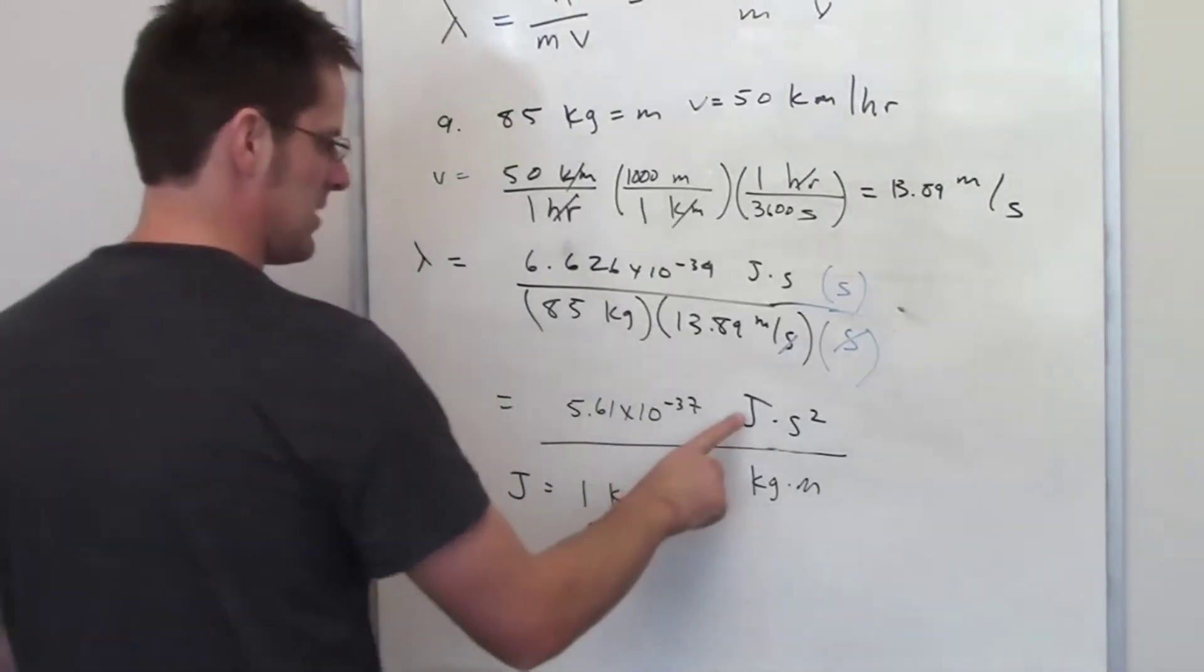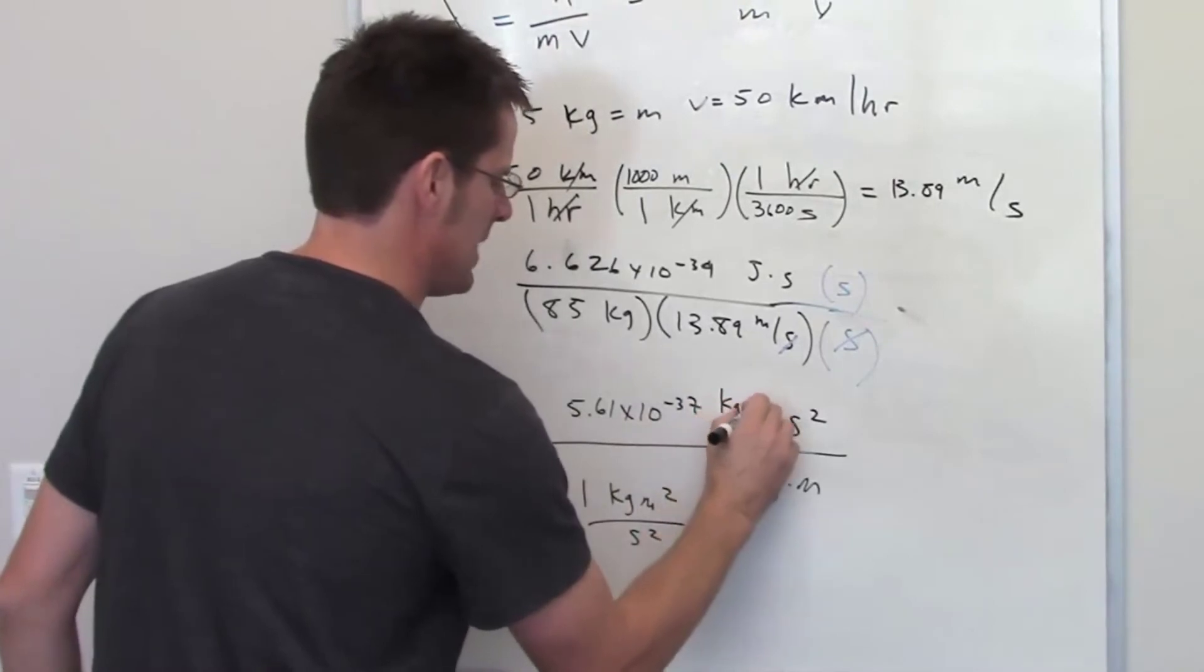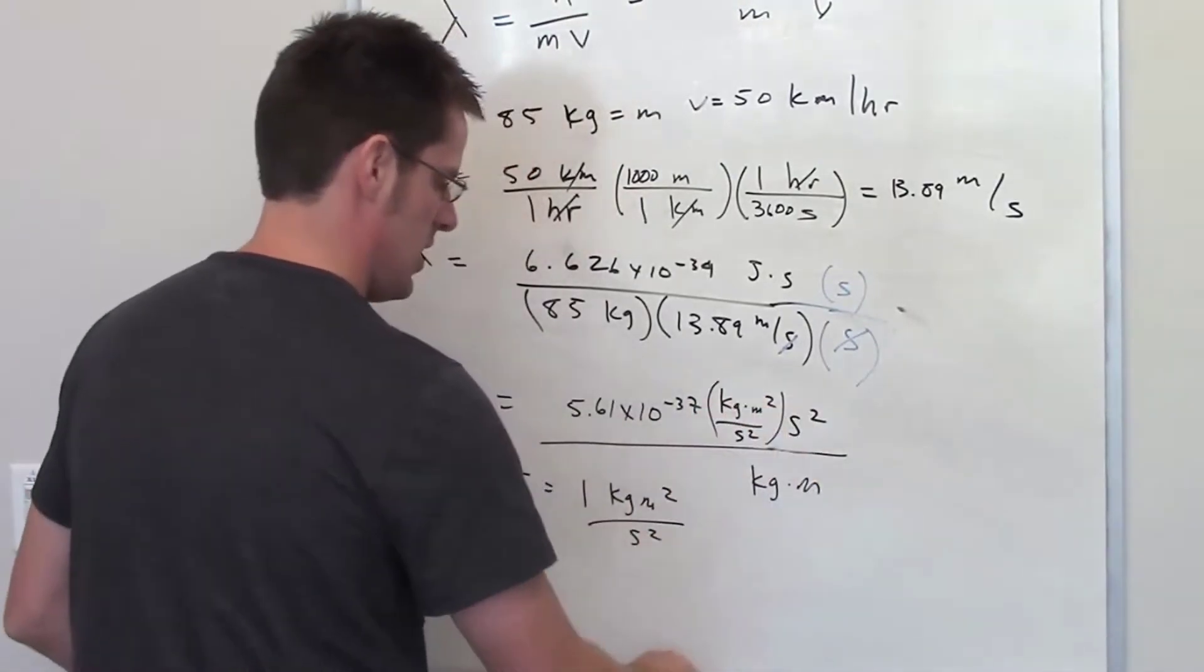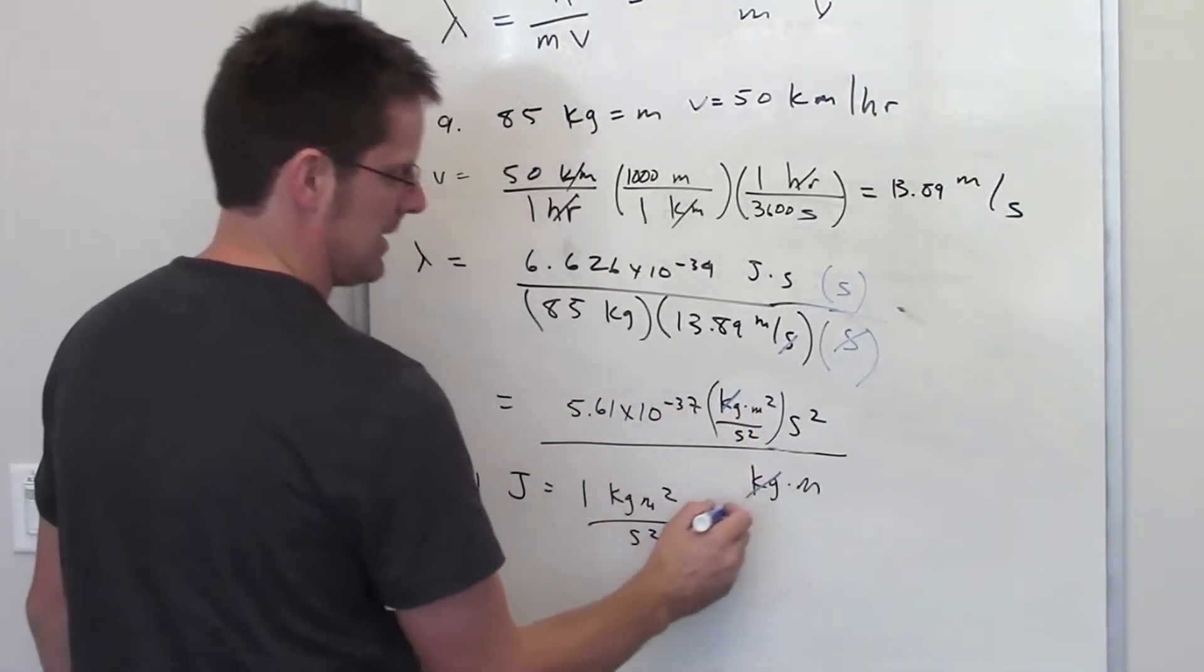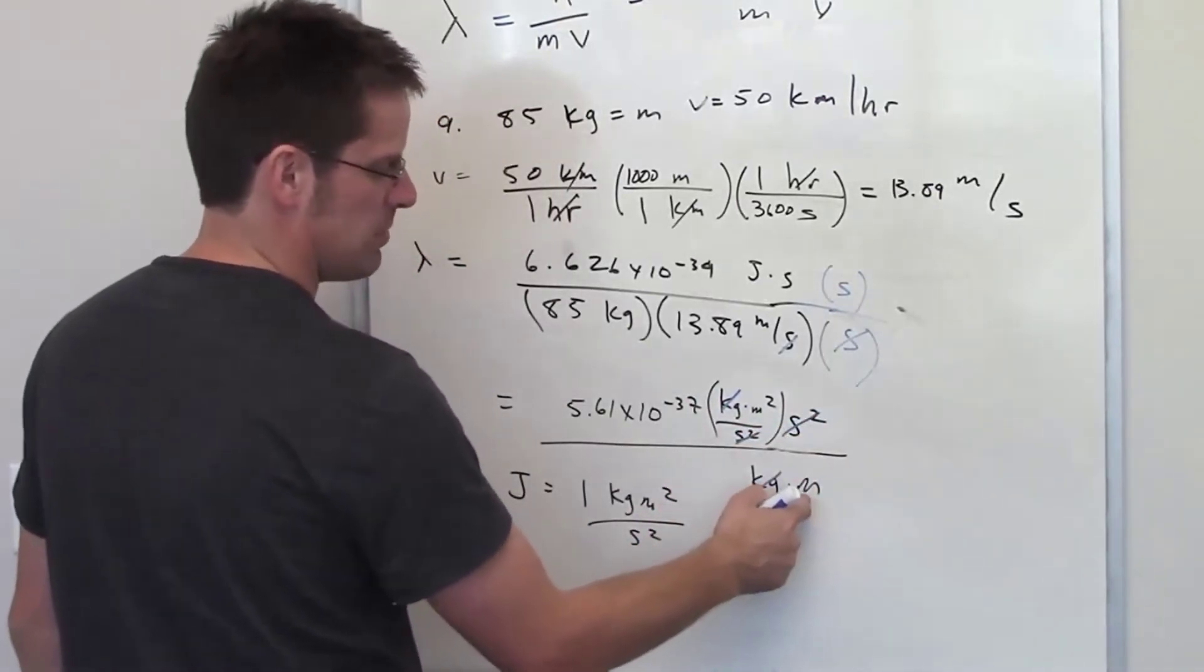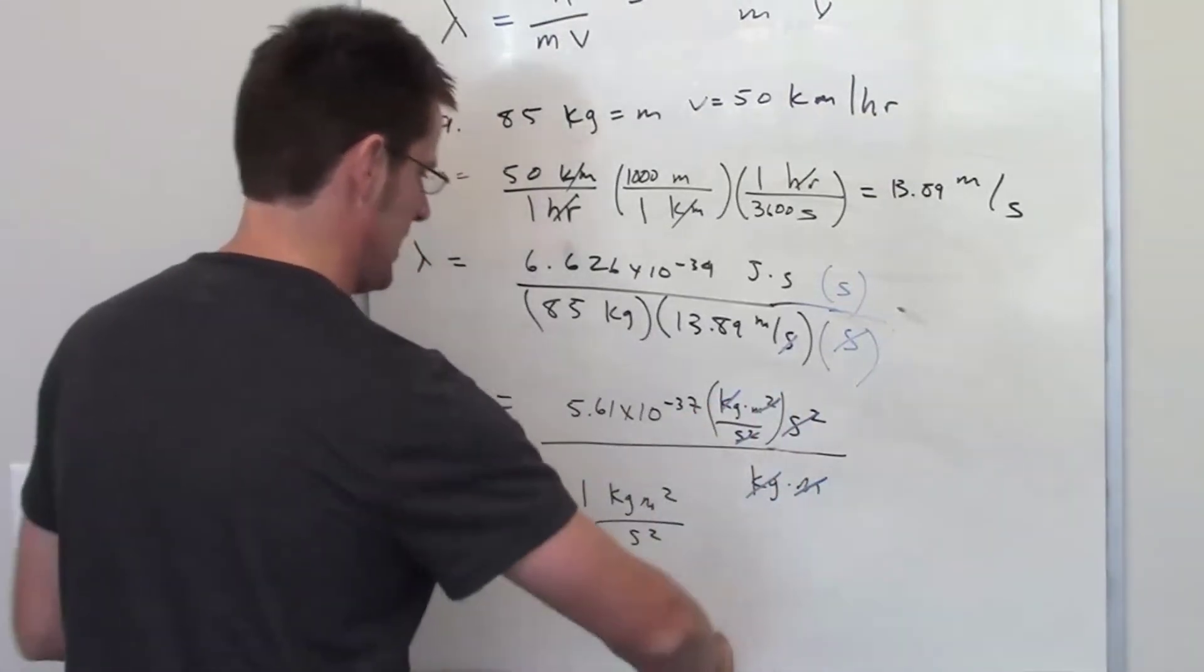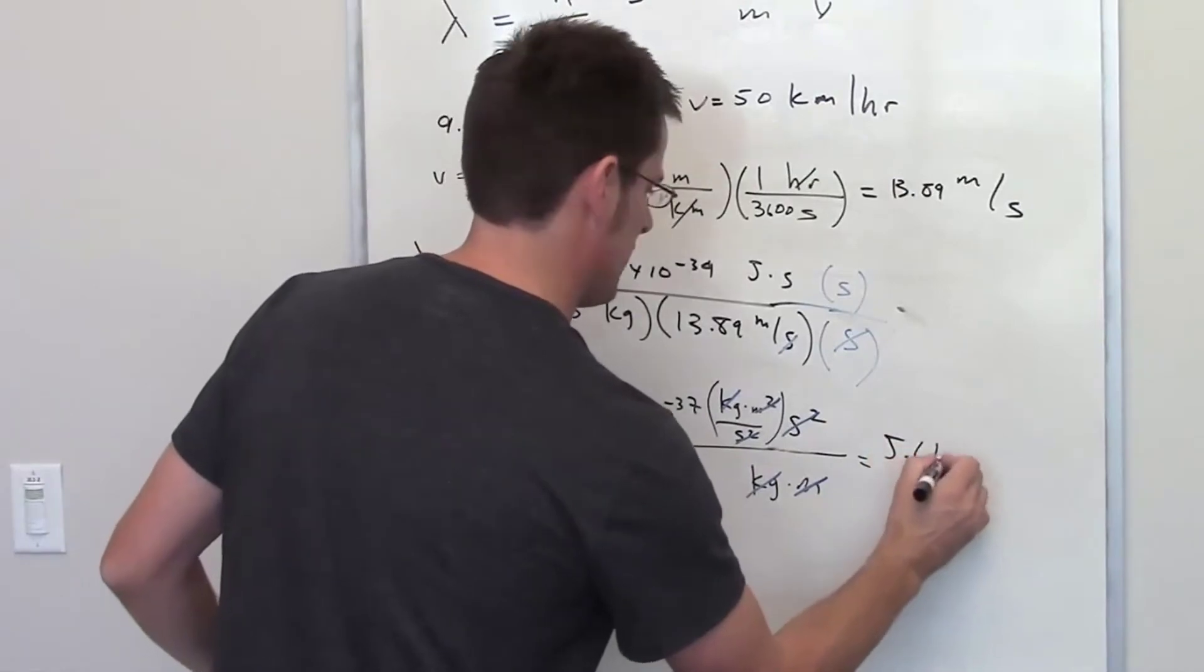If I take this joule right here and replace it with a kilogram meter squared per second squared, then you can clearly see the kilograms cancel each other out, the seconds squared cancel each other out, and this meter in the denominator cancels out one of the meters in the numerator. So indeed, I end up getting a final answer with units of meters.